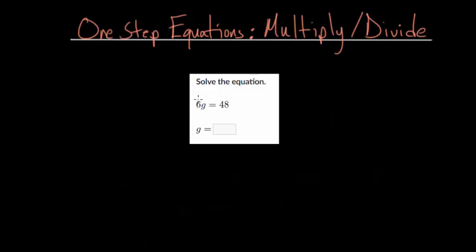So when you see 6g equals 48, you can think of this as 6 times some number gives us 48. So let me write that down. So the way to interpret this is as 6 times some number gives us 48.